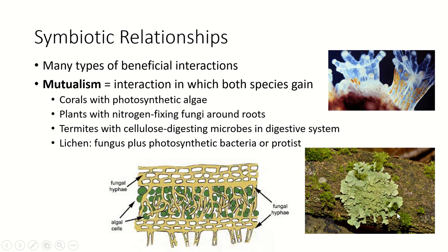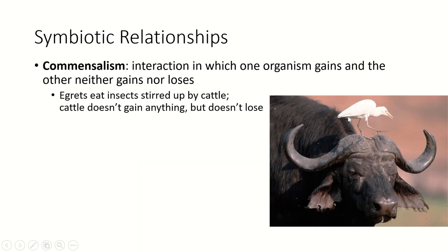One of my favorites is lichen. When you start looking around you'll see lichen all over the place. Lichen kind of looks like moss — moss is an actual plant with leaves — but if you see something that sort of looks like leaves but kind of doesn't, that's likely a lichen. A lichen is actually a fungus with photosynthetic bacteria or algae living inside it. Many lichens' fungus and photosynthetic organism don't live separately at all — they only exist as a mutualistic partnership.